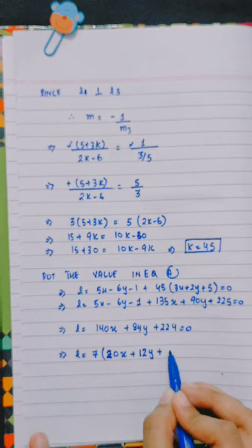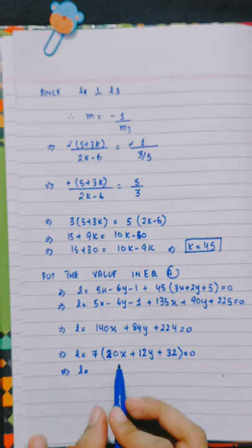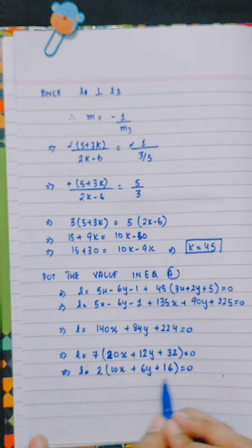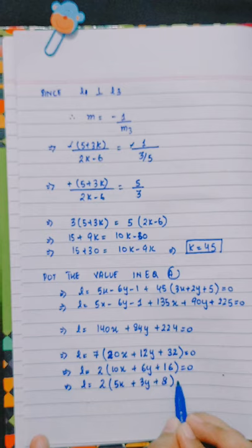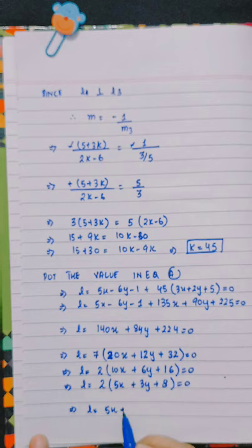Dividing through by a common factor, we get 140x plus 84y plus 224 equals 0. Dividing by 28: 5x plus 3y plus 8 equals to 0. So the required line L is equal to 5x plus 3y plus 8 equals to 0.